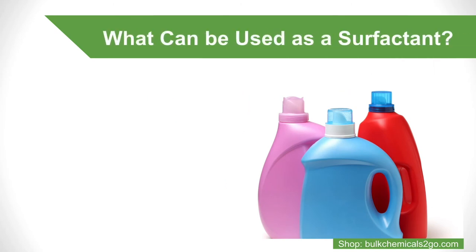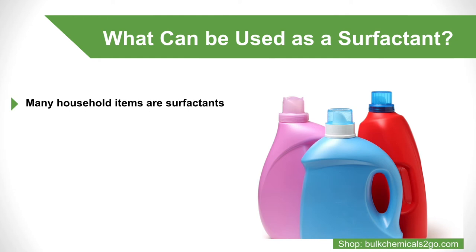What can be used as a surfactant? Many household items are surfactants, and effective at cleaning and degreasing because of this compound. If you're looking to DIY this chemical agent, then look no further than your kitchen, laundry room, or even your shower for everyday items including dish soap, laundry detergent, and shampoo.